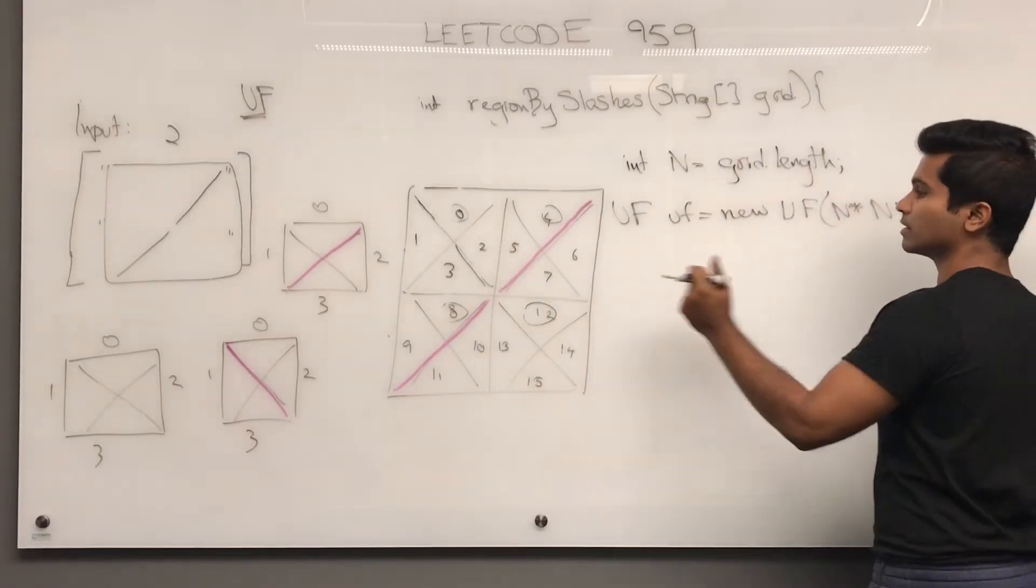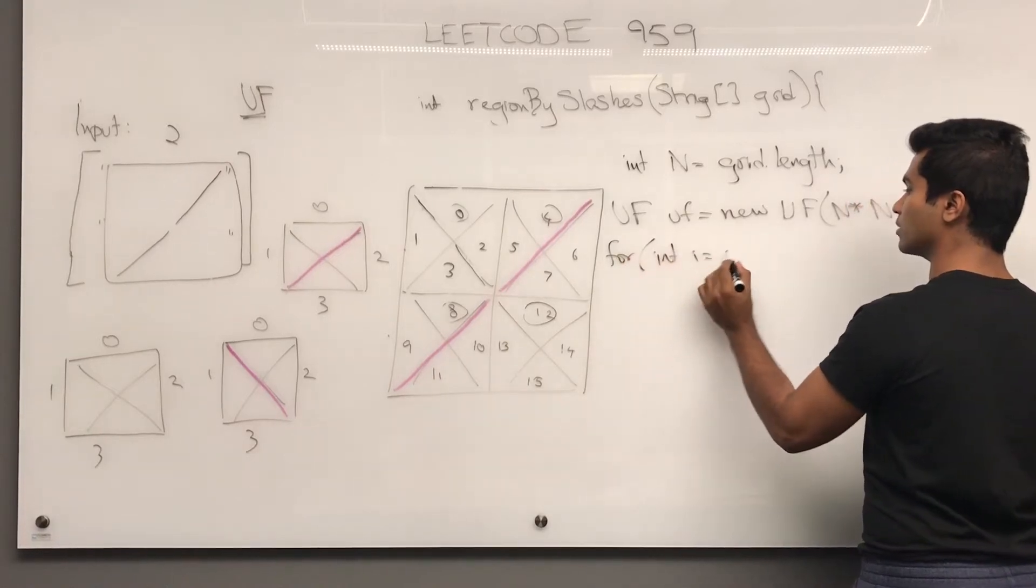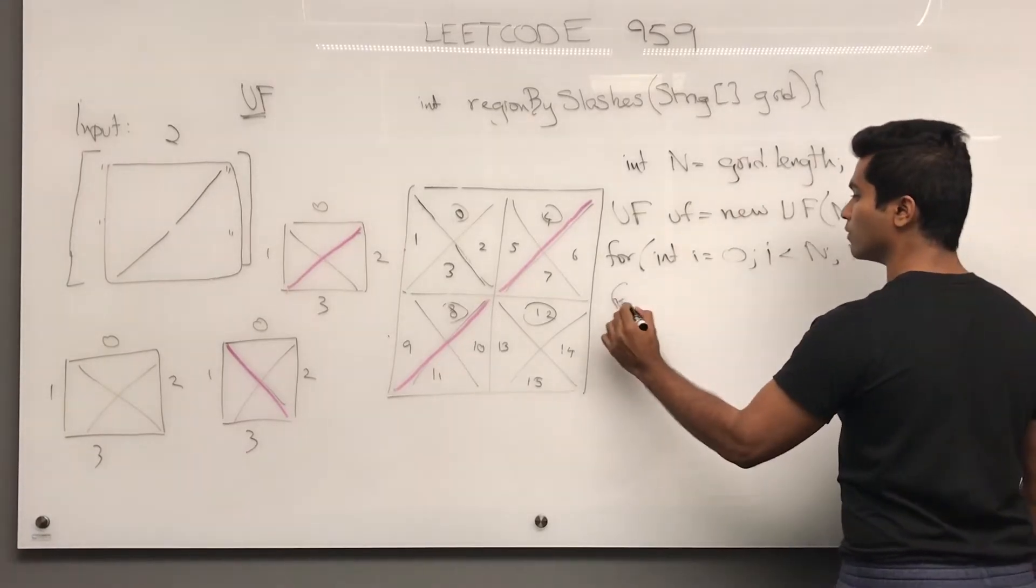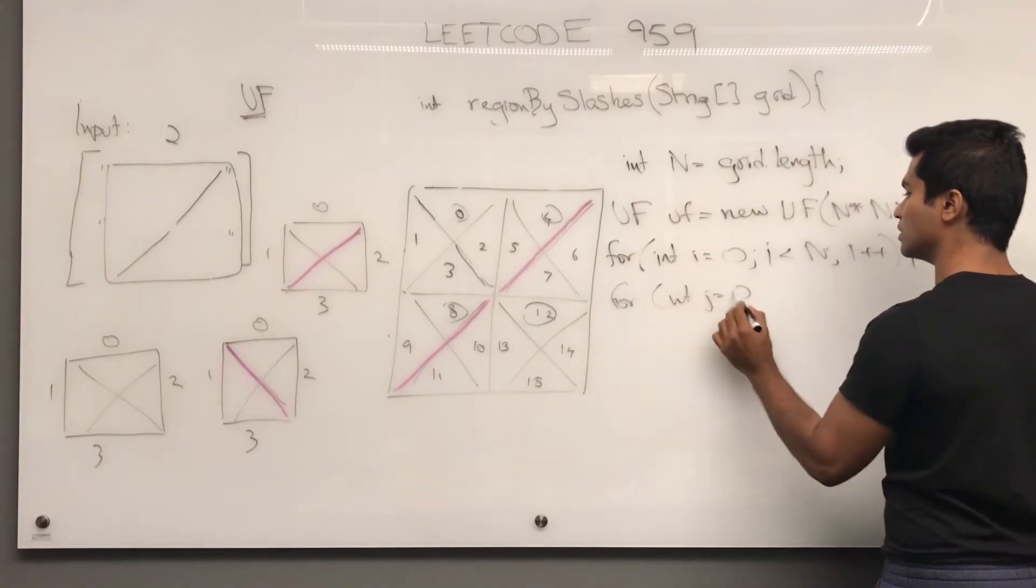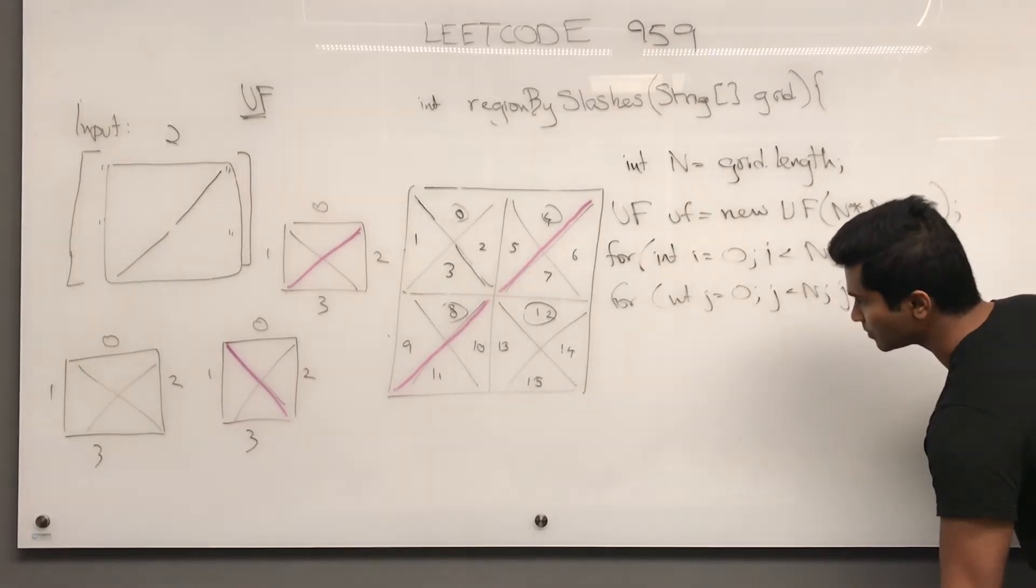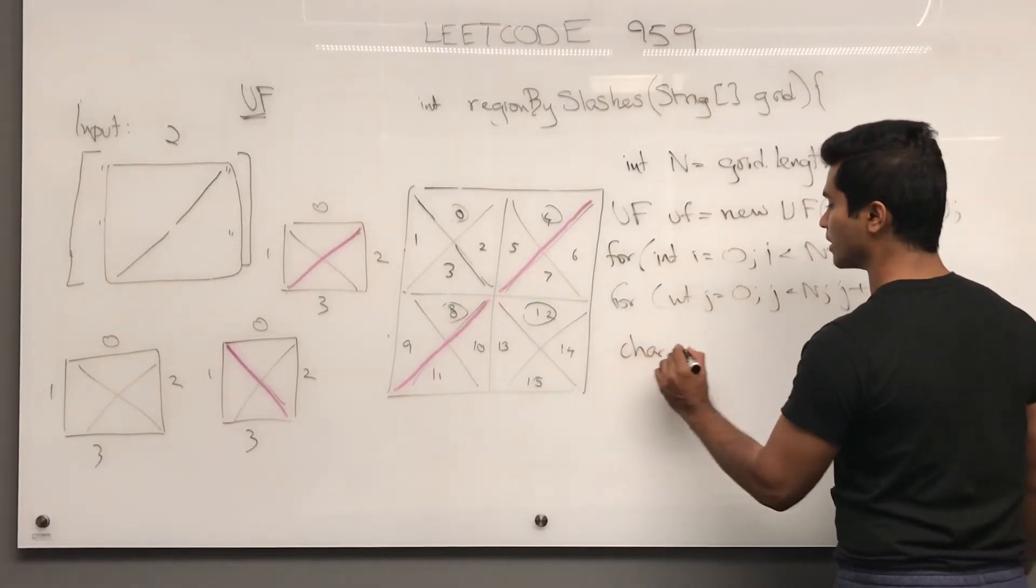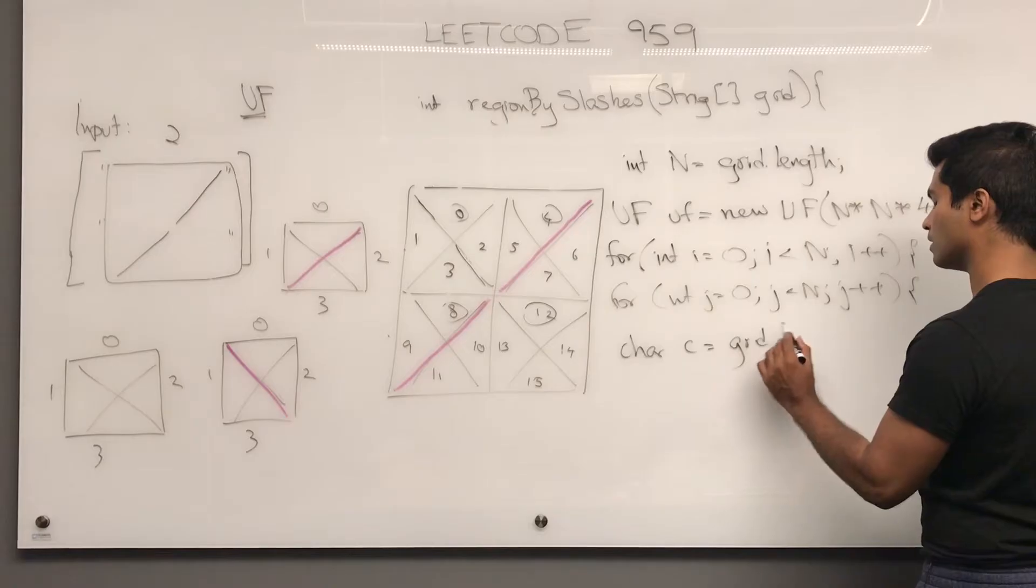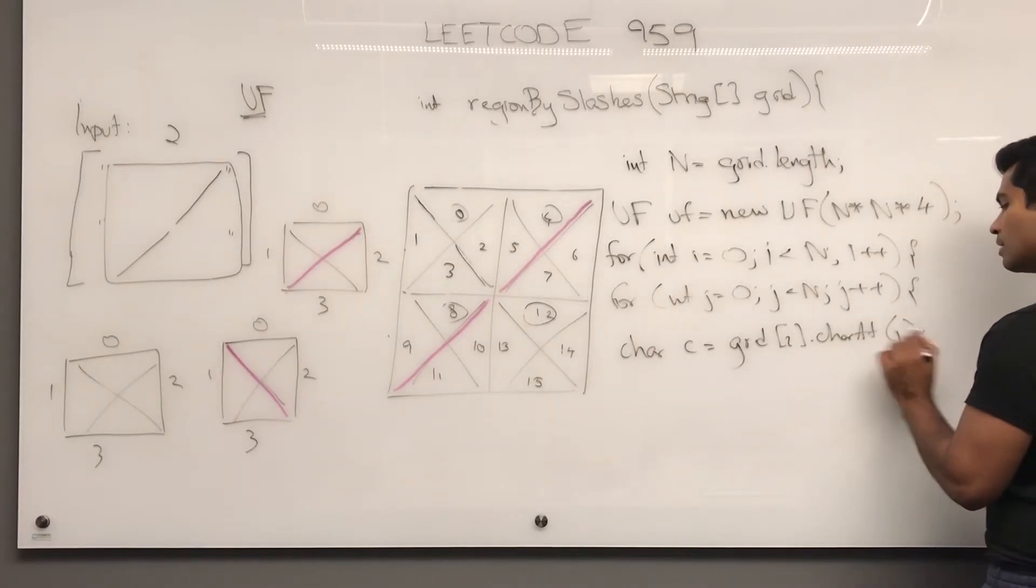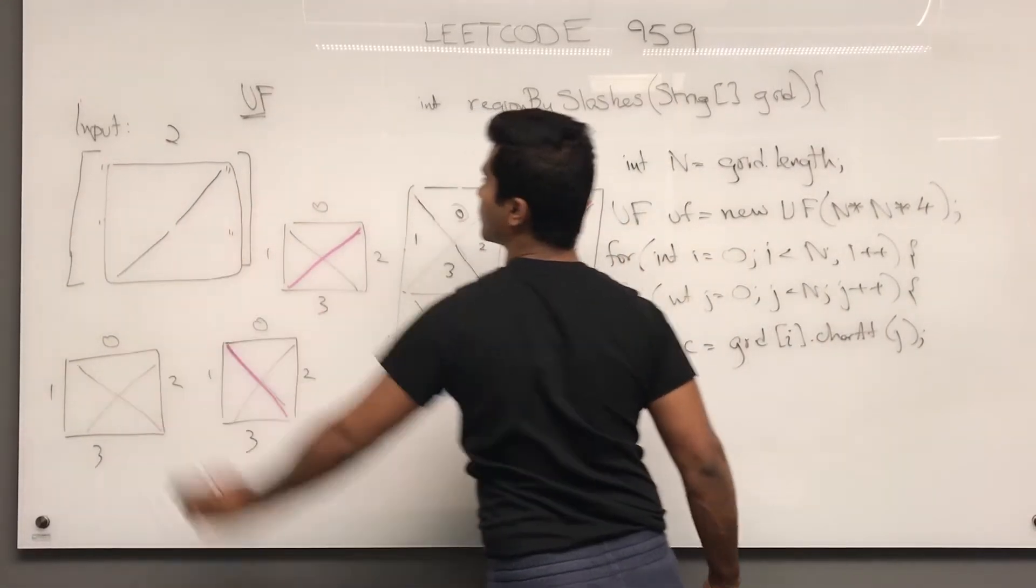Now let's get into the actual meat of the problem. For int i equals 0, i is less than n, i++. For int j equals 0, j is less than n, j++. What we do is we get a character each time. Character c is going to be grid of i dot char at j. So the first one we're going to get this guy and we're going to get the first one which is a space.